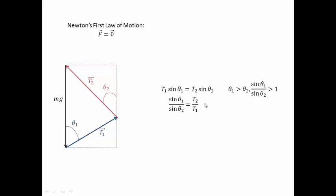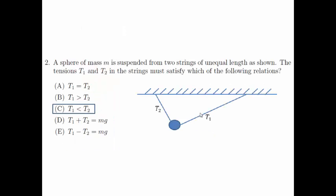Now, we know that theta1 is more than theta2. And therefore sin theta1 over sin theta2 is more than 1. And from this equation, we can also tell that T2 over T1 is more than 1. Rearranging we'll get T2 must be bigger than T1. Hence, the answer to this question is C: T1 less than T2.